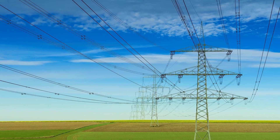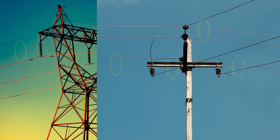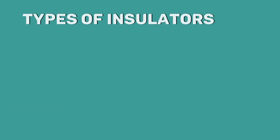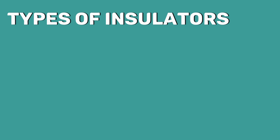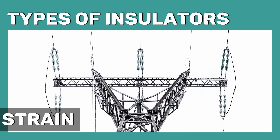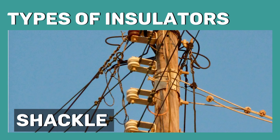The overhead power lines are connected to the towers or poles through insulators. There are different types of insulators including pin type, suspension type, strain and shackle. In this video, I am going to explain these types one by one.